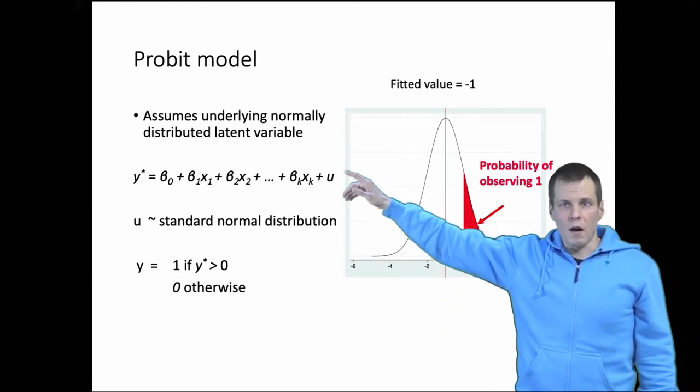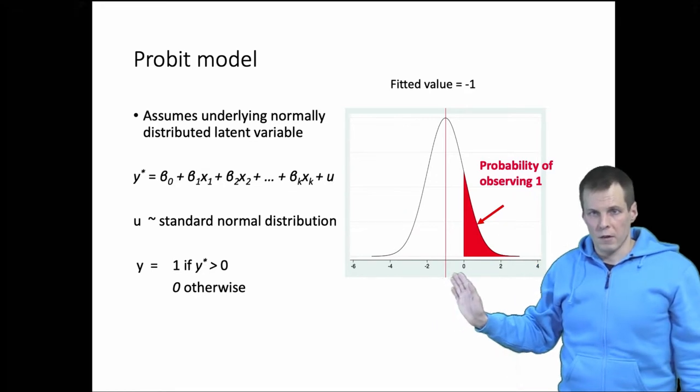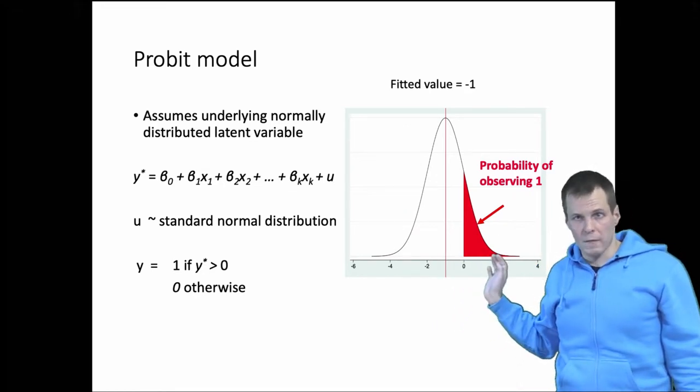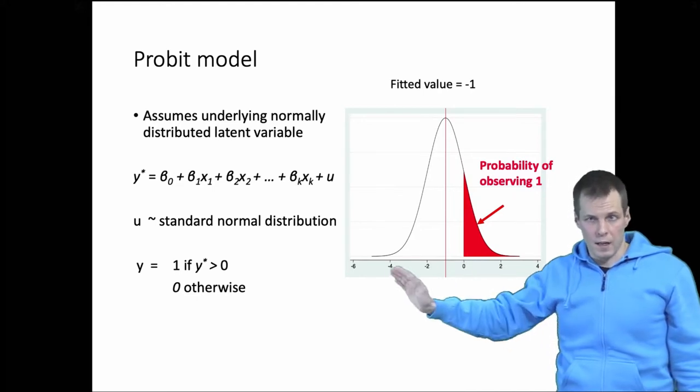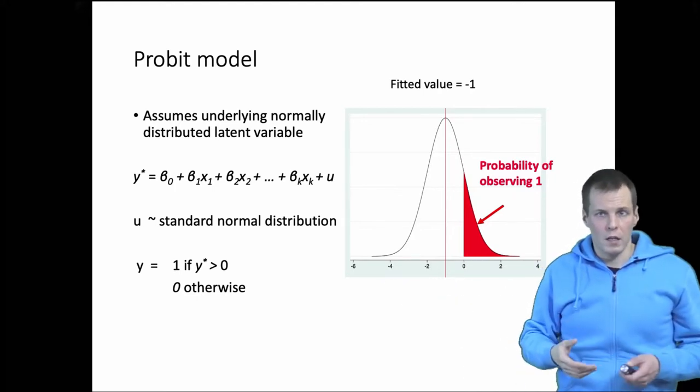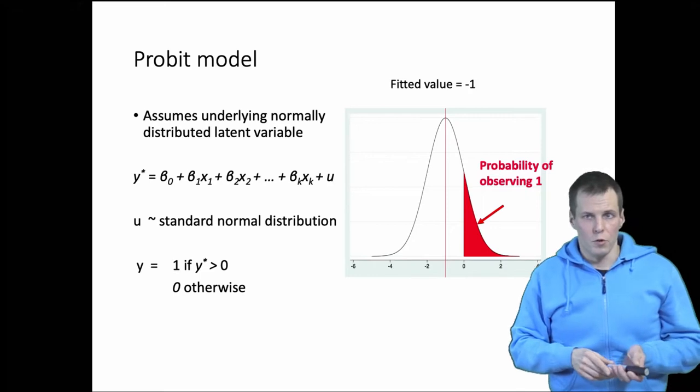So if the y star receives a value greater than 0, then we have a positive value response for y. And if it receives a negative value or 0, then we have a negative or 0 response for y.